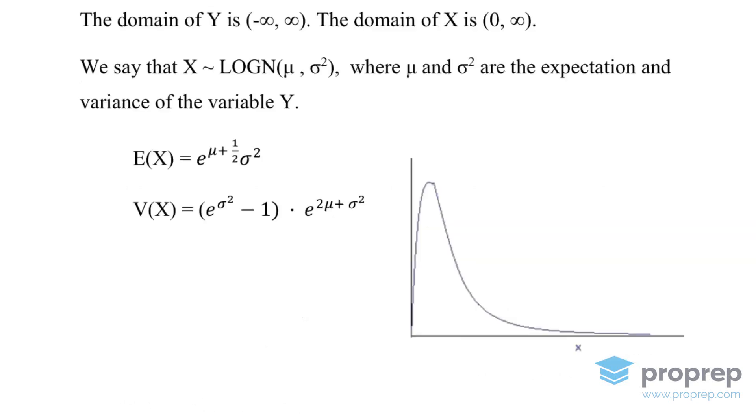So how do we calculate the expectation and variance of X? Well, the expectation of X is equal to e to the power of mu plus one-half sigma squared. And the variance of X is equal to e to the power of sigma squared minus one times e to the power of two times mu plus sigma squared.